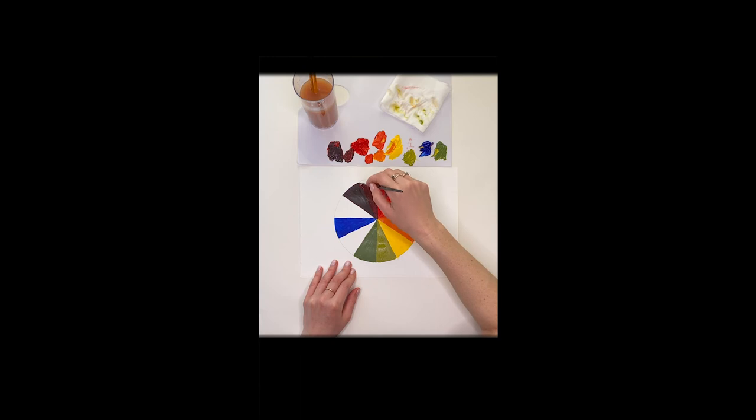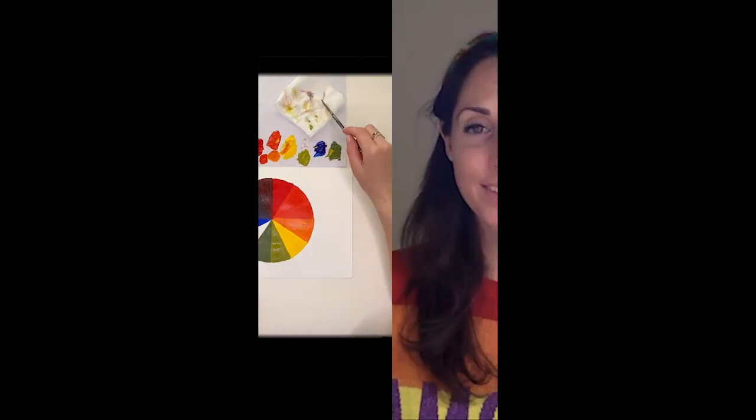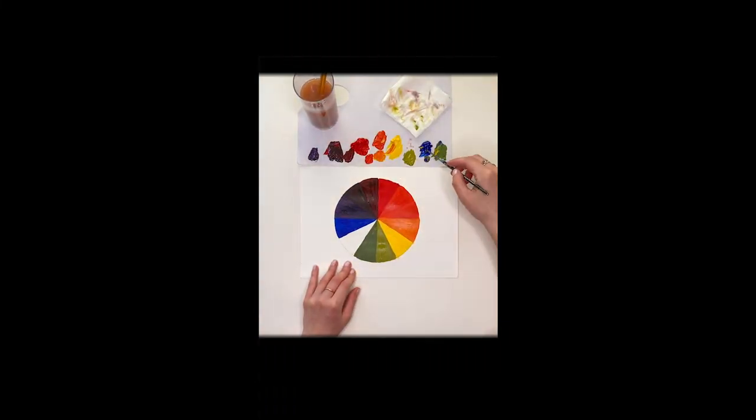Now we're going to take our blue, our dark blue, and mix it in with the purple to create a purplish blue color, like a dark plum. Mix those in together. It's all coming together now. Got one more to go. Take a scoop of the blue, a scoop of the green, mix them together to create a lovely bluey green.